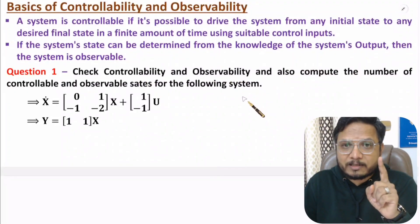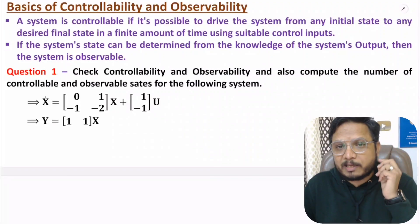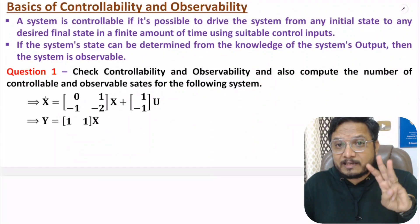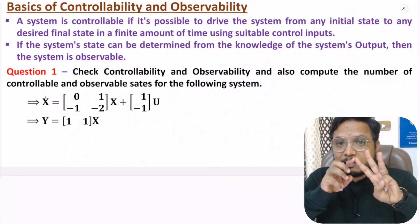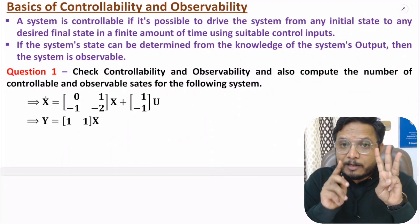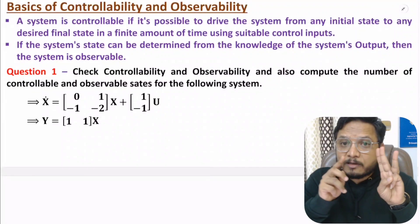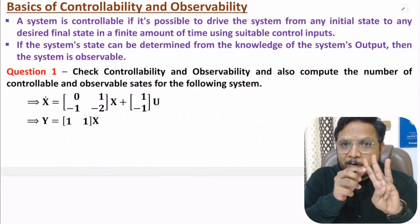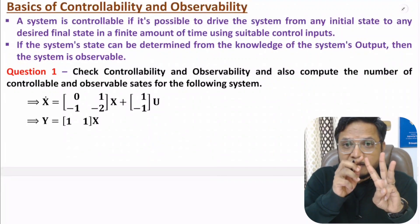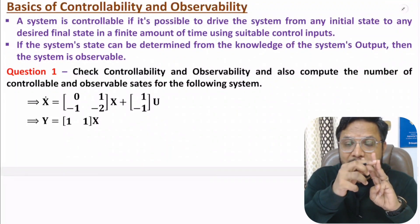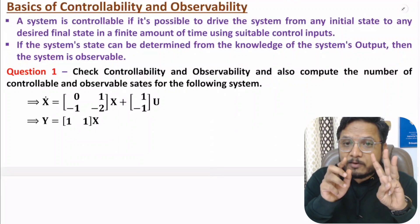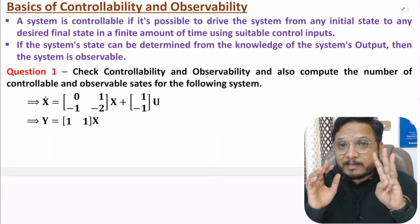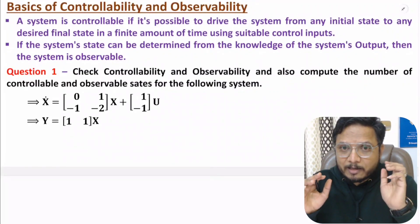First of all, you need to understand what is controllability and what is observability. Let me explain that by one example. Let us say we have one system that is having three states: state 1, state 2 and state 3. If you can control all three states using input, then you can say the system is controllable. For example, if you have state 1 and you can switch from 1 to 2 and from 1 to 3 using inputs, then you can say state 1 is controllable. Likewise, if all the states are controllable, then you can say the entire system is controllable.